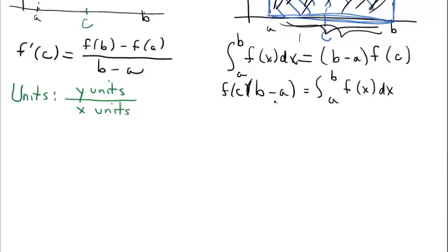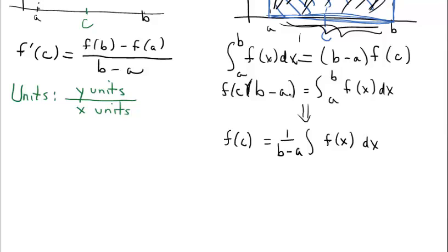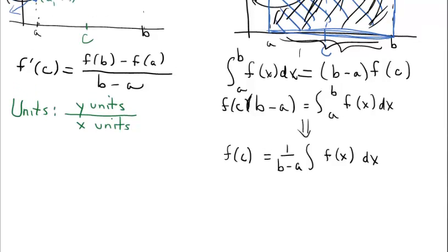If I talk about the average value of a function, the average value is a y value. That has me take F of C and isolate it — divide both sides of the equation by b minus a. Instead of stacking into a fraction, I'll multiply by 1 over b minus a. So the mean value theorem results in us finding the average value: the height of the one rectangle that has the same area as the value of the integral. This is the formula we're going to be working with in the next video.